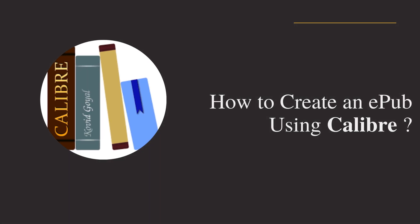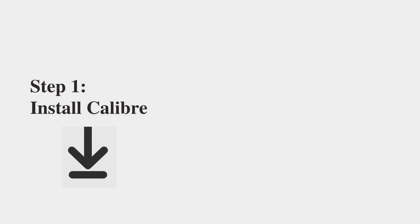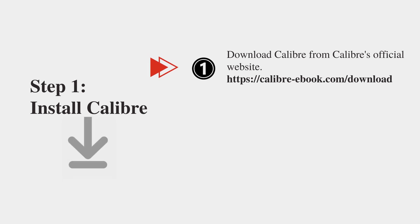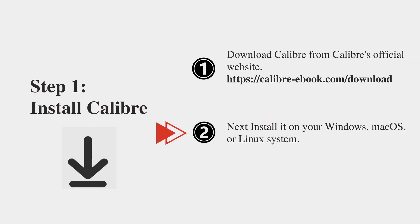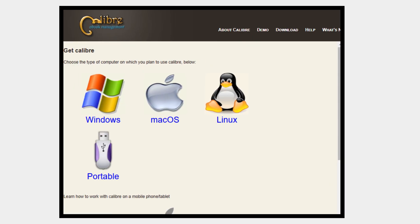How to create an EPUB using Calibre. Step 1: Install Calibre. Download Calibre from Calibre's official website, then install it on your Windows, Mac OS, or Linux system.